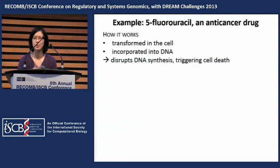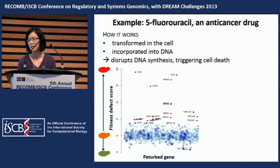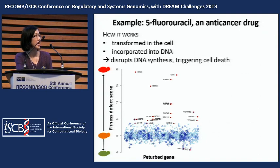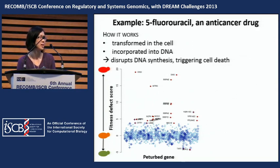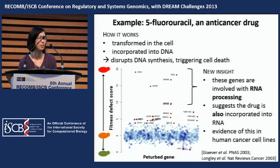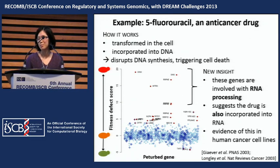For example, we look at the anti-cancer drug 5-fluorouracil, which disrupts DNA and DNA synthesis, thereby triggering cell death. Along the x-axis you see different deleted genes, and along the y-axis the corresponding fitness defect score for each strain. A higher score indicates the strain grows worse than the untreated sample. The genes with the highest scores are involved in RNA processing, suggesting the drug is also incorporated into RNA — evidence that exists in human cell lines. This underscores the value of genome-wide interrogation for getting a more complete picture of a small molecule's mechanism of action.